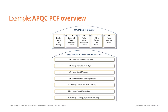The different categories are divided into operating processes, meaning core processes, according to a value chain of five main categories: develop vision and strategy; design and develop products and services; market and sell products and services; deliver products and services; and manage customer service. These categories are very abstract in nature, meaning each category can apply both to a product or to a service.